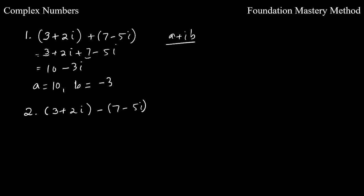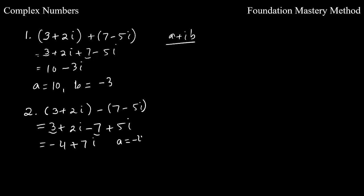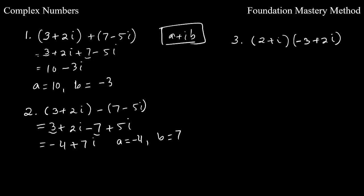The next example is subtraction: (3 + 2i) minus (7 + 5i). Open the parentheses: 3 + 2i minus 7 minus 5i. Then 3 minus 7 gives negative 4, and 2i minus 5i gives negative 3i. So the result is negative 4 minus 3i, where a is negative 4 and b is negative 3.